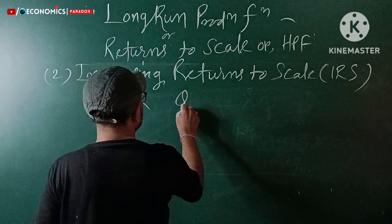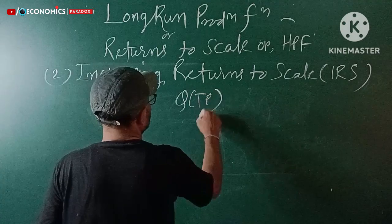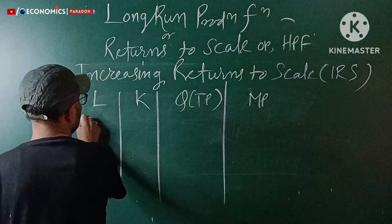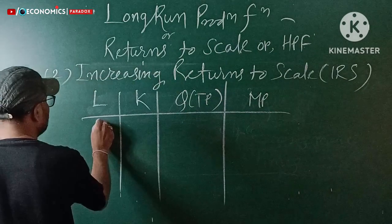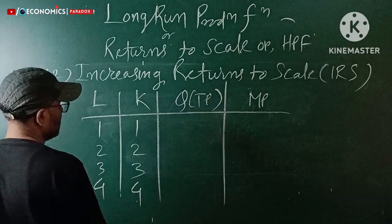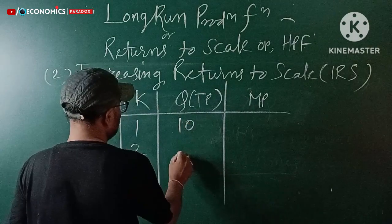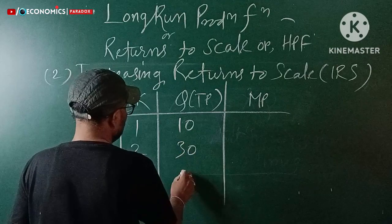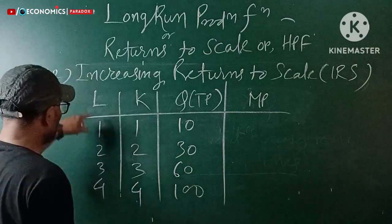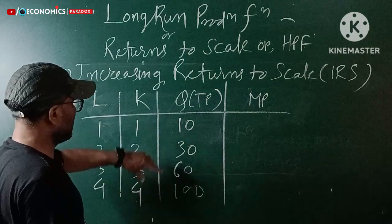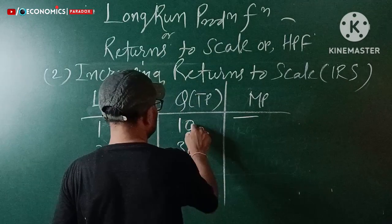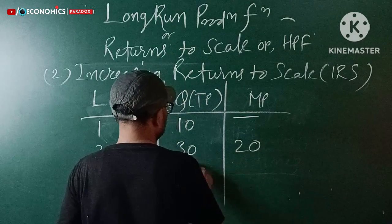Looking at the table: we have labor, capital, total product, and marginal product. For example, when labor and capital are both at one unit, production is sixty. When both factors increase at the same rate, output increases more than proportionately.